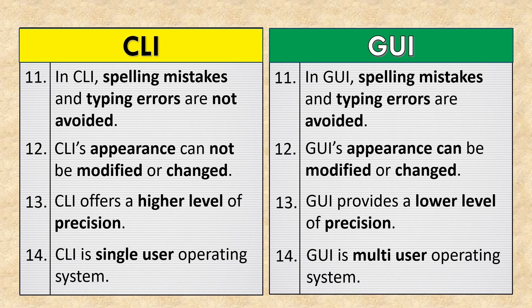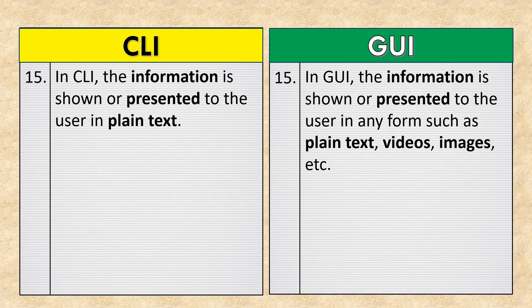CLI is a single-user operating system, while GUI is a multi-user operating system. In CLI, information is shown or presented to the user in plain text. In GUI, the information can be presented in any form such as plain text, videos, images, etc.